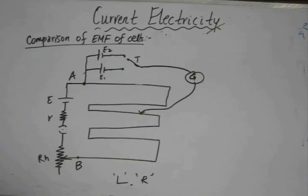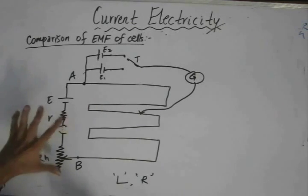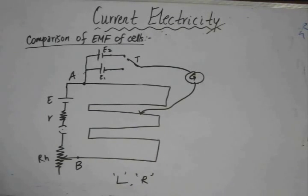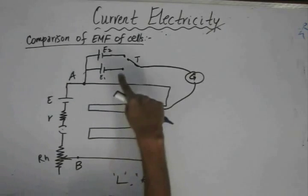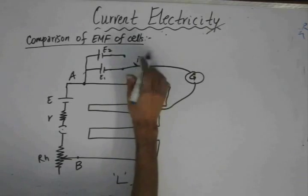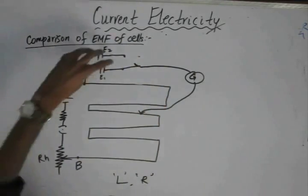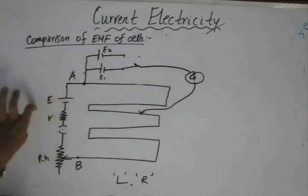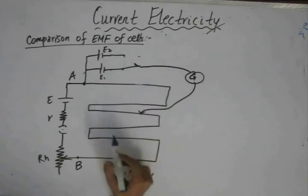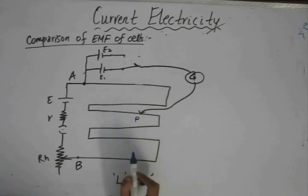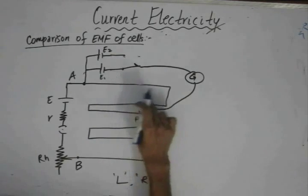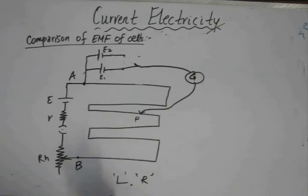To compare the EMF of the cells, we use the method of null deflection. As per the principle of the potentiometer, the potential difference between two points is directly proportional to the corresponding length. We connect one cell at a time using the two-way switch. First, we connect E1 — E2 is left open. We move the jockey across the potentiometer wire and find point P where there is no deflection in the galvanometer.